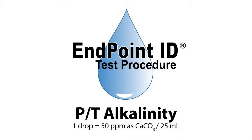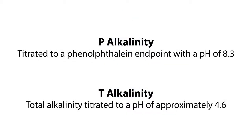This is a demonstration of a P and T alkalinity drop count test kit using Endpoint ID procedures. P alkalinity is the alkalinity titrated to a phenolphthalein endpoint with a pH of 8.3. T alkalinity is for total alkalinity, which is titrated to a pH of approximately 4.6.